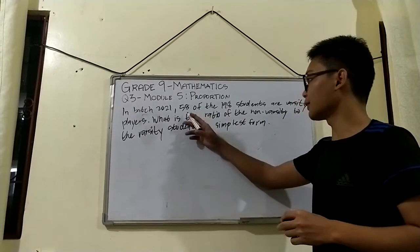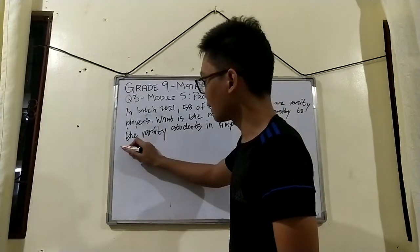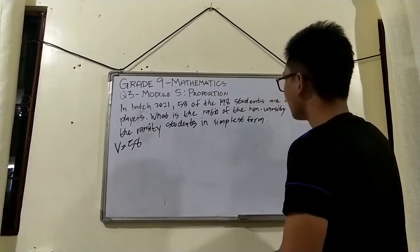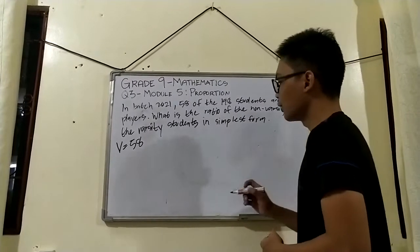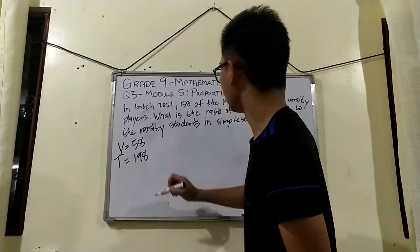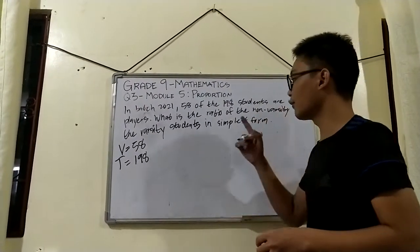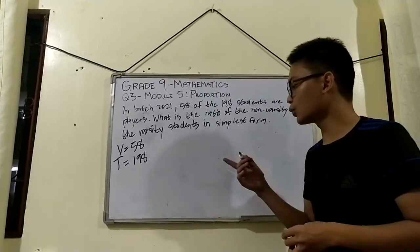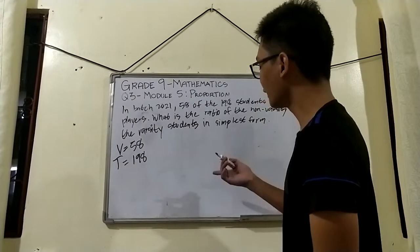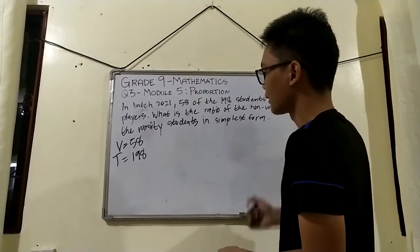It is said in the given that 58 of the 198 students are varsity players. So the number of varsity players, which we will let as V, will be 58. And the total number of students is 198, which we will let as P is equal to 198.